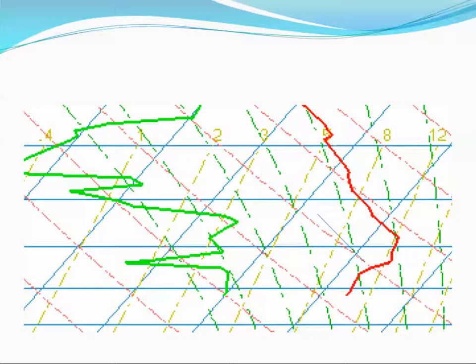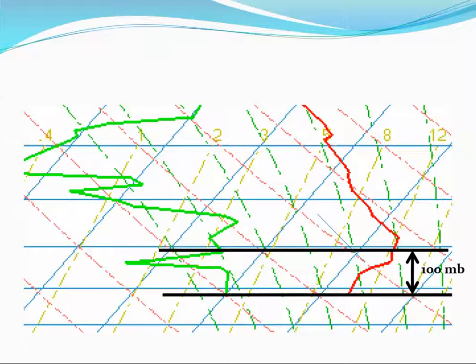The first thing we have to do is mark the top and bottom boundaries for our layer. I've done that here in black. So this is the layer here that we're interested in finding the mean potential temperature and mixing ratio for.